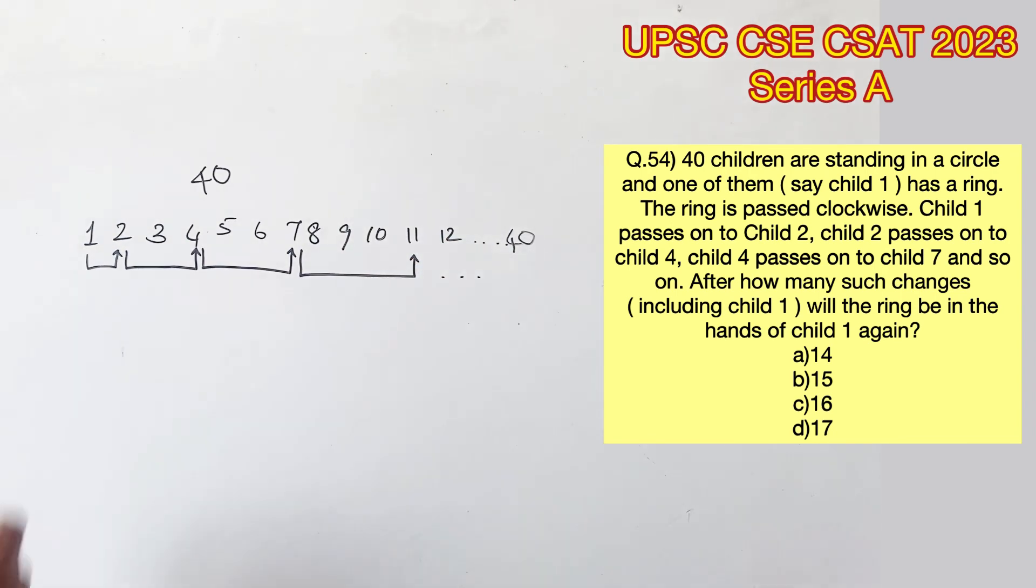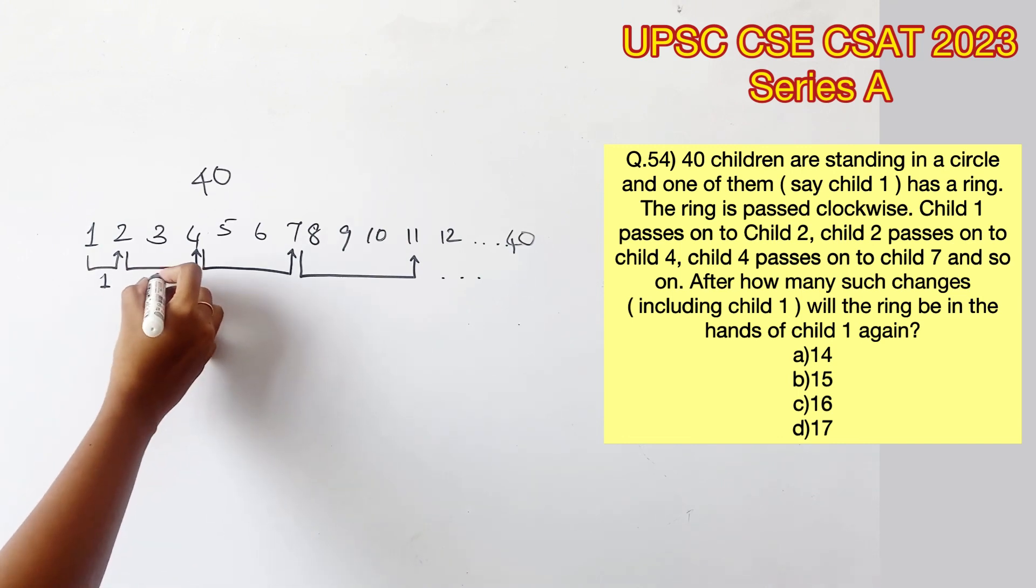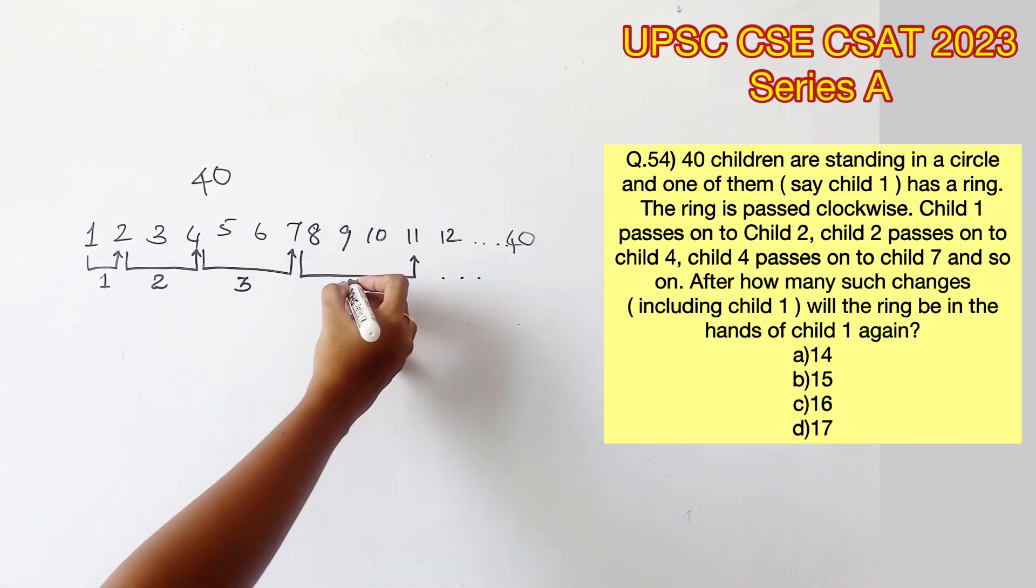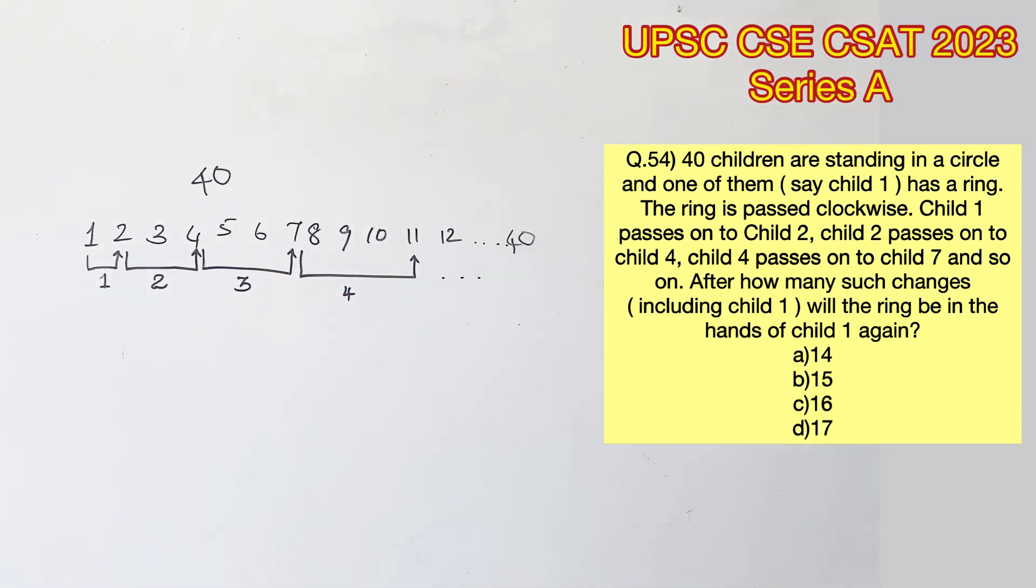And so on. So the pattern is 1, 2, 3, 4, and so on, which means the first child passes to the child that's one step away, the second child passes to the child that's two steps away, and so on.